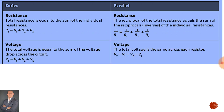For voltage: in a series circuit, the total voltage is equal to the sum of the voltage drops across the circuit. In a parallel circuit, the total voltage is the same across each resistor.